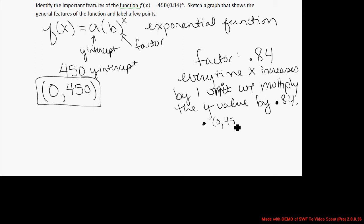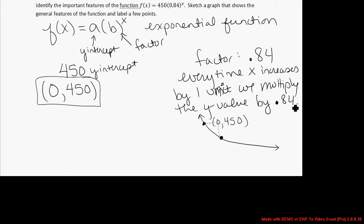If you start at a height of (0, 450) and increase x by one unit, taking 450 and multiplying it by 0.84 will make the new y value smaller than 450. Repeatedly multiplying a positive value by 0.84 will make your y values get smaller and smaller, so this will be a decreasing function. When your factor is a number between 0 and 1, the result will be a decreasing exponential function.